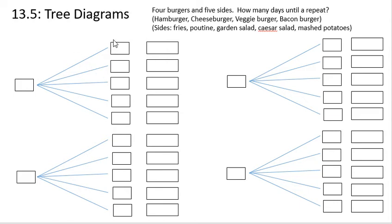Imagine for a moment that you wanted to see how many days your meal would have to take to repeat. You have four burgers and five sides as a choice. So your four burgers are a hamburger, a cheeseburger, a veggie burger, and a bacon burger. Your sides are fries, poutine, a garden salad, a Caesar salad, and mashed potatoes.